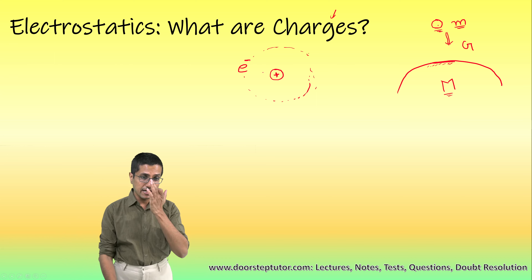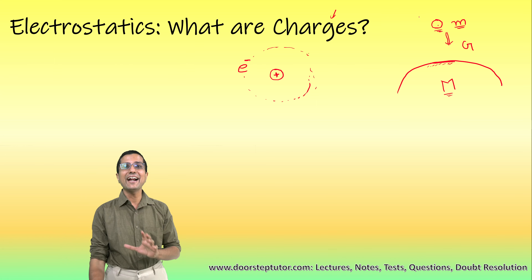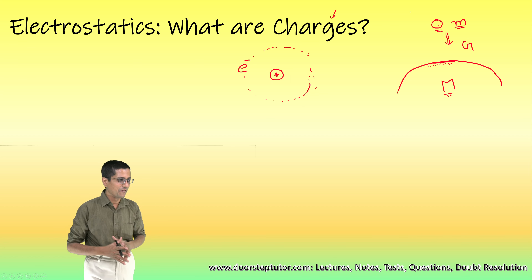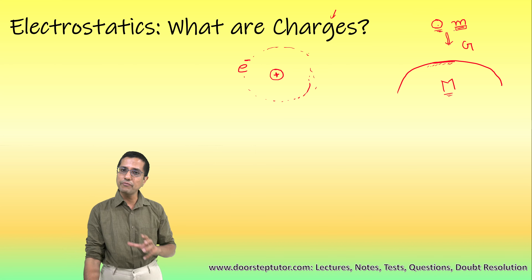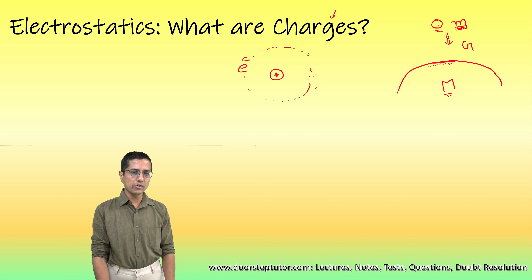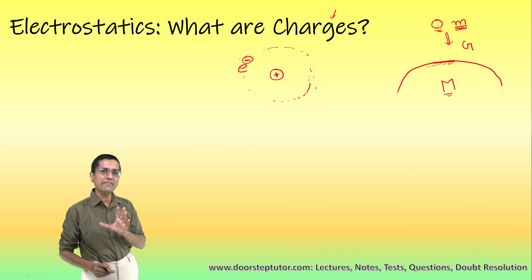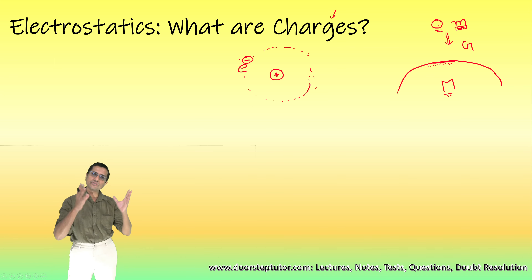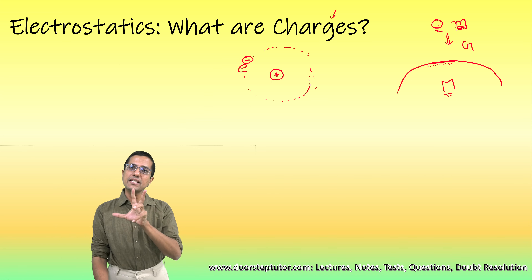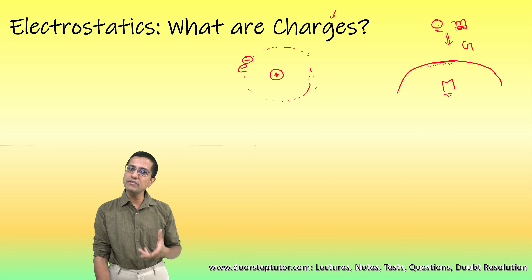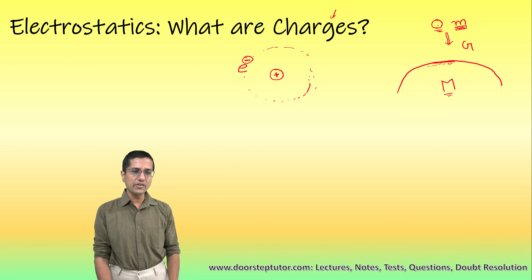Unlike mass, charges come in two flavors. Mass has only a single version, but in the case of charge there are two versions or two flavors, and we call them negative and positive — names given historically. It just so happens that the nucleus inside the atom has a positive charge, while the electron which revolves around the nucleus has a negative charge.